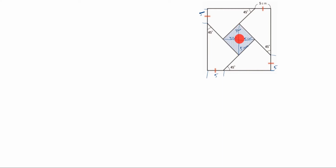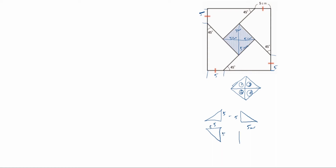Now you see here: this is one triangle, this is one triangle, this is one triangle, this is one triangle. So I'll draw here — this is one triangle, this is one triangle, this is one triangle, this is one triangle. So we have to split: this is one, two, three, and four triangles. Each triangle has this side as 5 centimeters and this side as 5 centimeters — same for all four triangles.